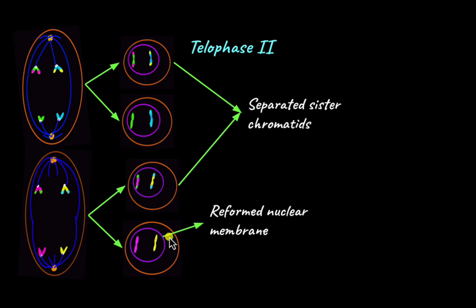Meiosis 1 resulted in the formation of two cells, and those two cells undergo meiosis 2 to form four haploid cells.